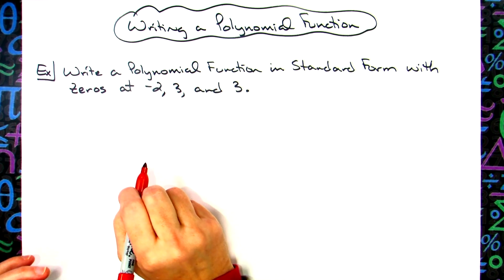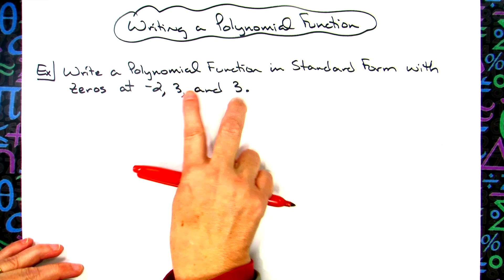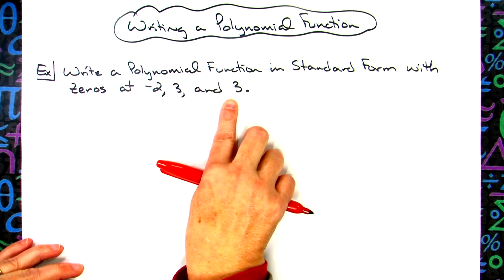In this video, we're going to be writing a polynomial function when given the zeros of a function. So these three numbers here are the zeros of the function.